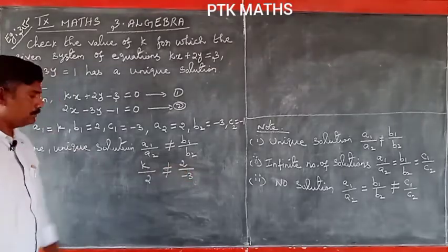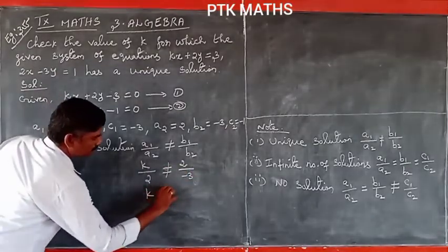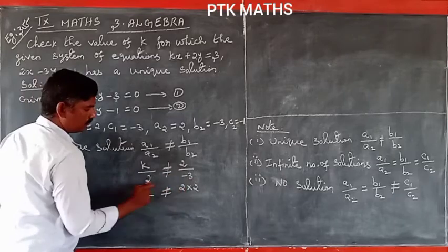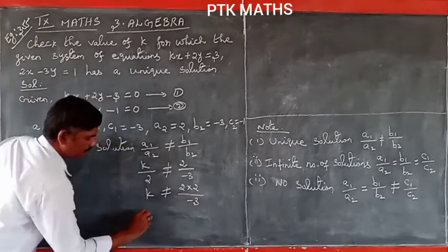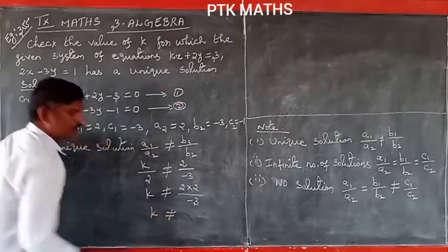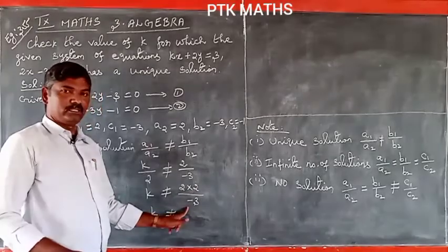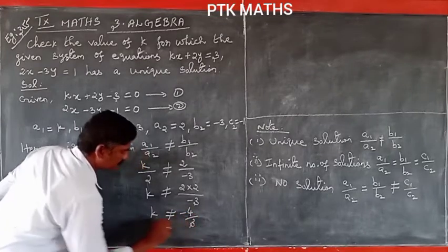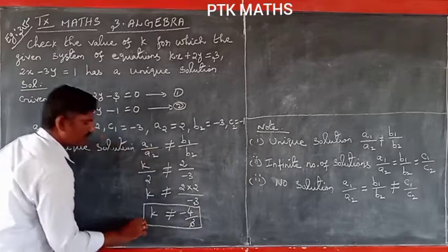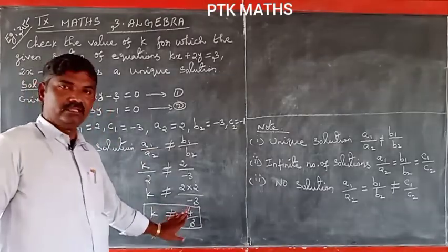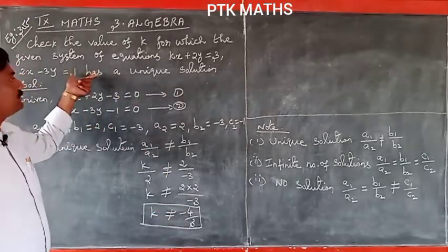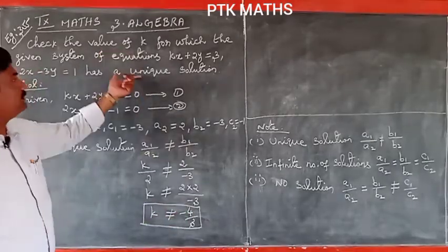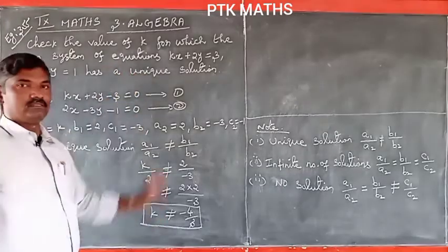Now, to solve: k by 2 not equal to 2 by minus 3. Cross-multiplying, k not equal to 2 times 2 divided by minus 3, which gives k not equal to 4 by minus 3, that is k not equal to minus 4 by 3. Therefore, the given system has a unique solution when k is not equal to minus 4 by 3.